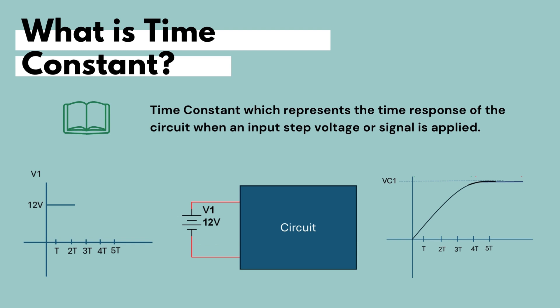Formally, the formal definition of the time constant is the time response of the circuit when an input step voltage or signal is applied. So if there is any change in the input voltage, then we would see a transient response, and the time for that transient response is represented by the time constant.